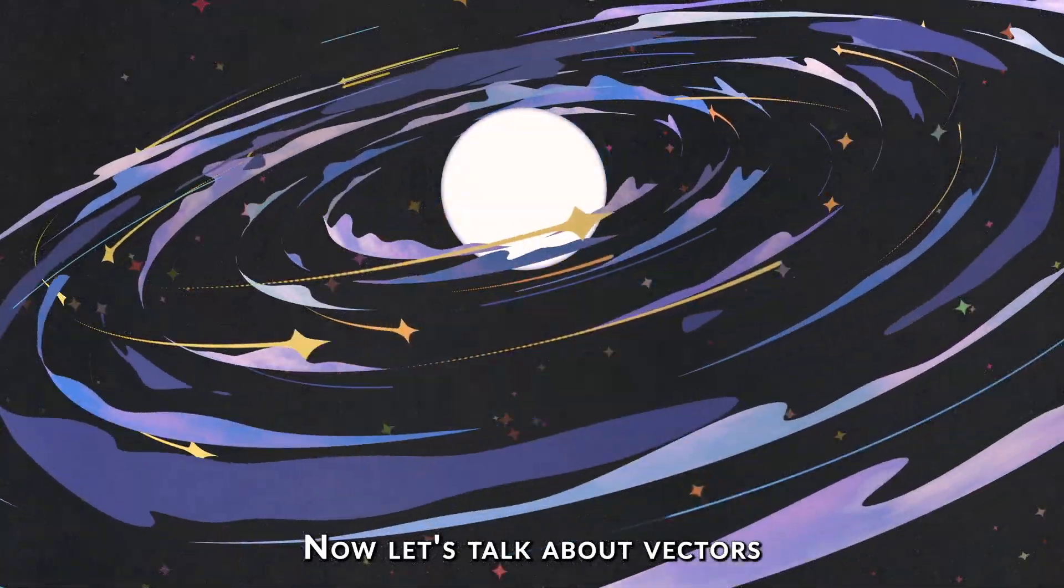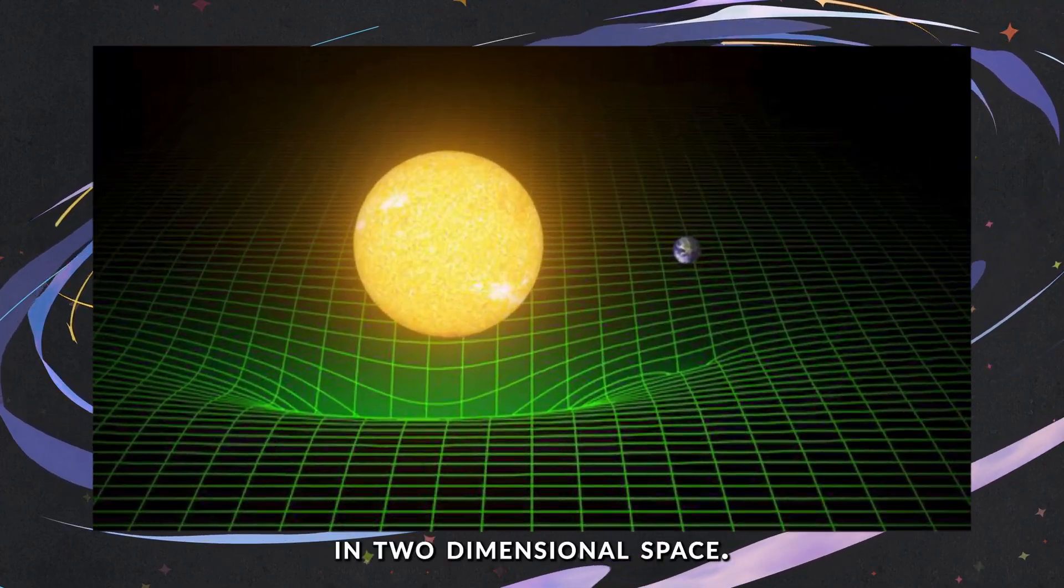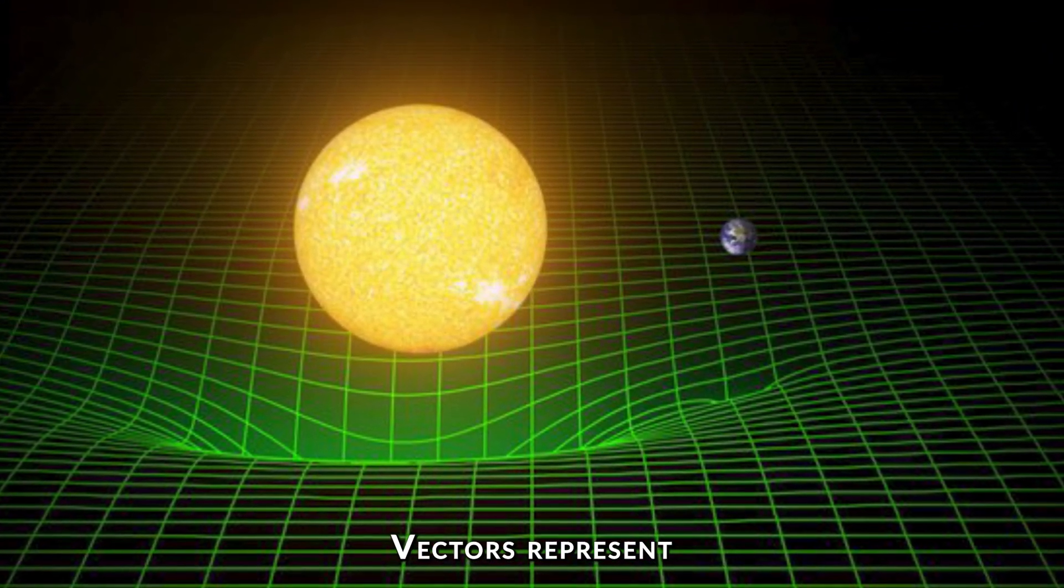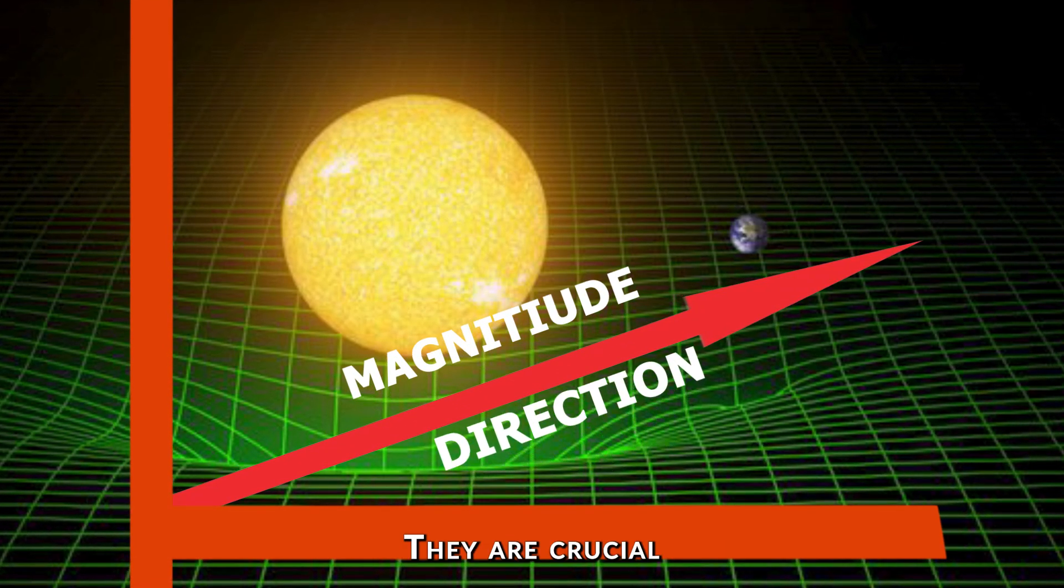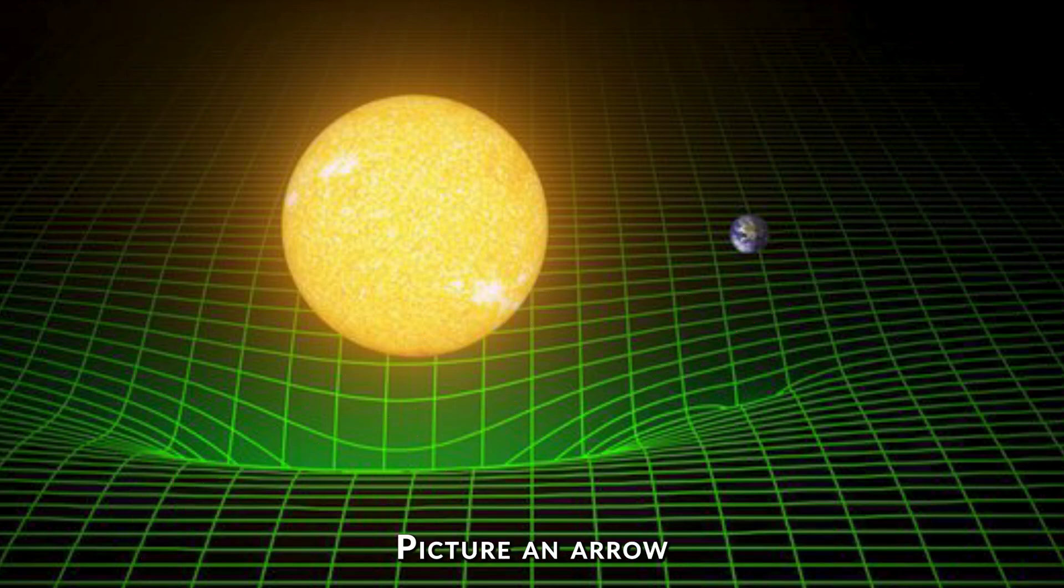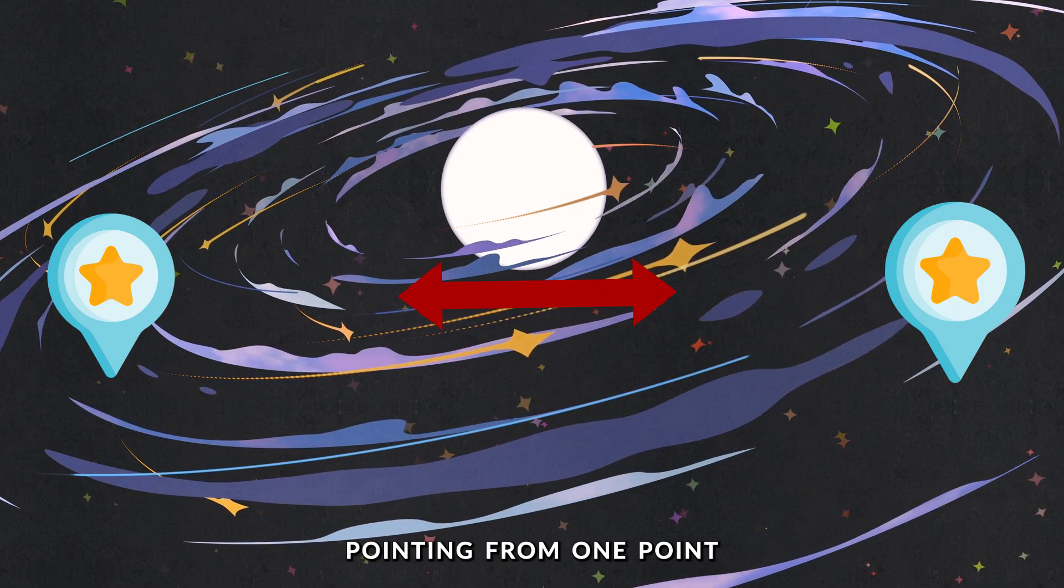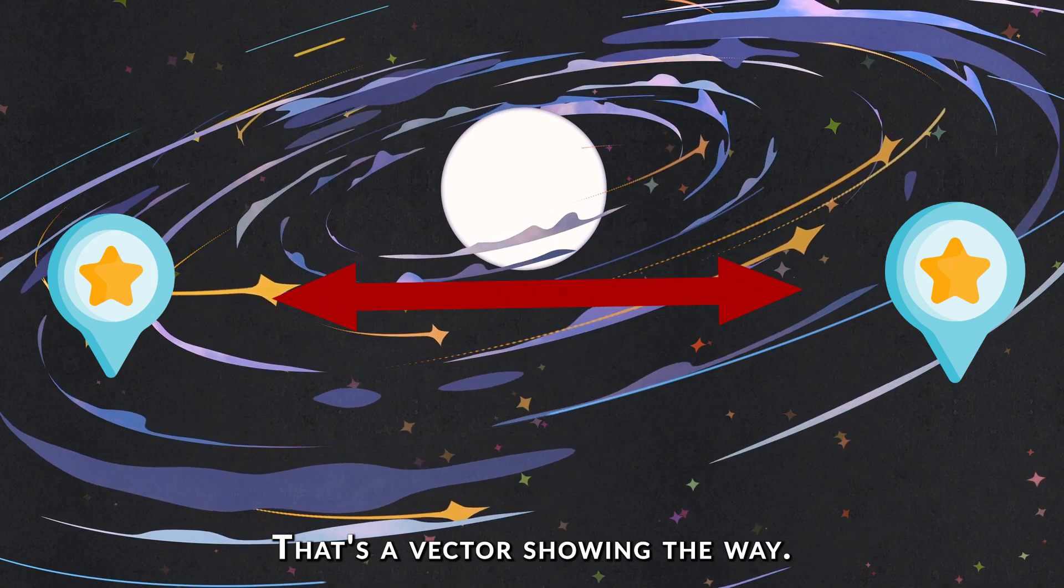Now, let's talk about vectors. In two-dimensional space, vectors represent both magnitude and direction. They are crucial for understanding movement and transformations. Picture an arrow pointing from one point to another. That's a vector showing the way.